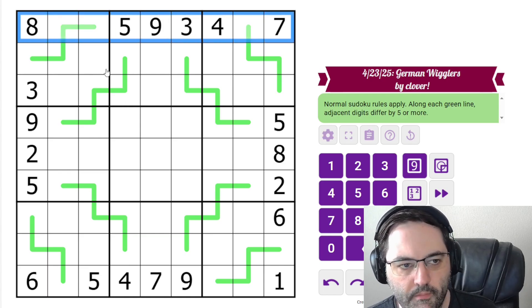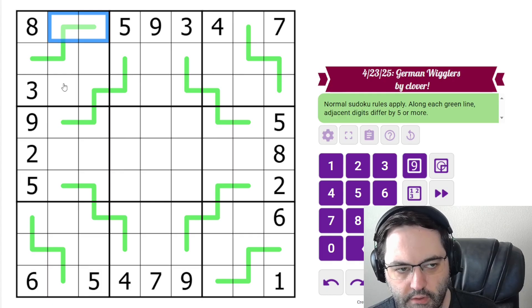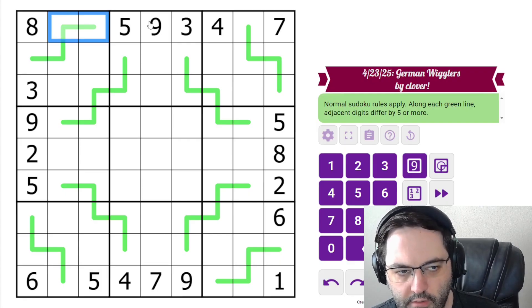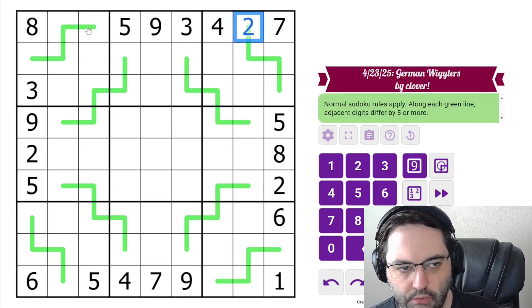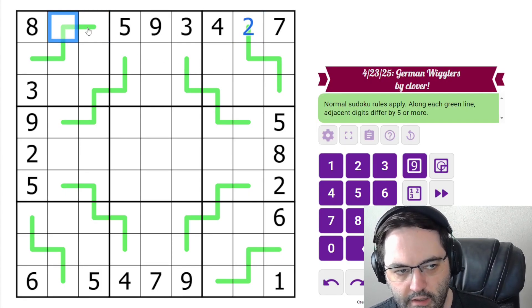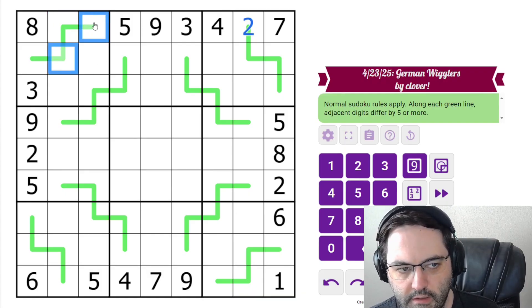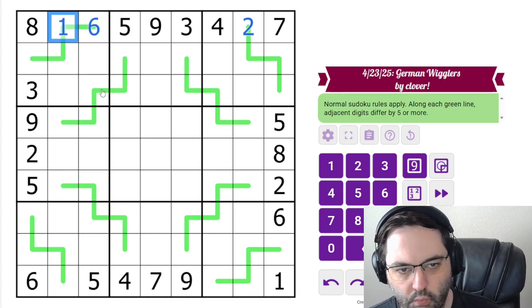Let's start with this row. We need 1, 2, and 6, and these two cells are connected by green lines, so they must differ by at least 5. So neither of them can be 2. This must be the 2. Additionally, 6 can't go here, because it would need to be next to two ones. So this is 6, 1, like that.